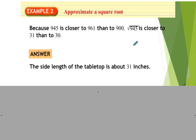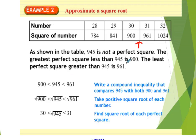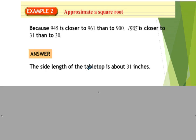Notice how we determined that 945 was not a perfect square. We didn't try to find a decimal — we figured out what two whole numbers it fell between and which one it was closer to. That's why our answer is about 31.